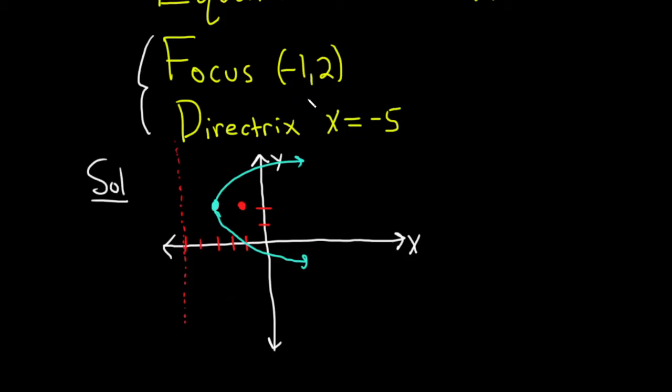Okay, so now we can write down the formula. Because it opens right we know that the y is being squared. Parabolas that open up and down have the x being squared. Parabolas that open left or right have the y being squared.